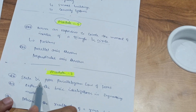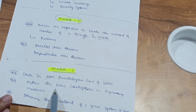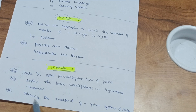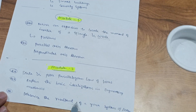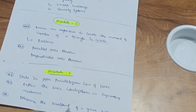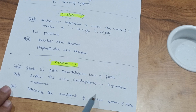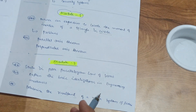In Module 3, the most frequently asked question is to state and prove the parallelogram law of forces. Next, explain the basic idealizations in engineering mechanics — continuum body, free body, and so on. Then, determine the resultant of a given system of forces — this is a basic 12th-grade concept. Just resolve forces using F cosθ and F sinθ to find the resultant. They will give you the forces and ask you to find the resultant.